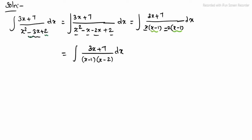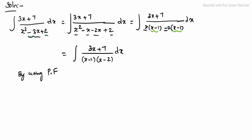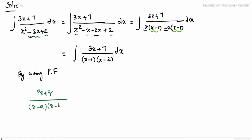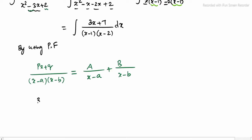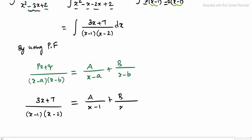By basic algebra we apply partial fractions. The general case: px + q divided by (x minus a)(x minus b) can be written as A divided by (x minus a) plus B divided by (x minus b). Applying this form: (3x + 7) divided by (x minus 1)(x minus 2) can be written as A divided by (x minus 1) plus B divided by (x minus 2).